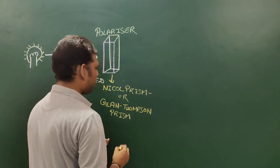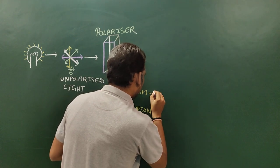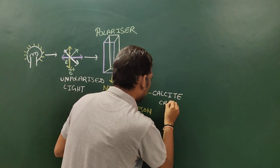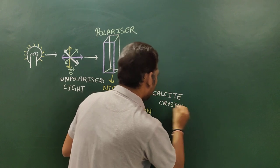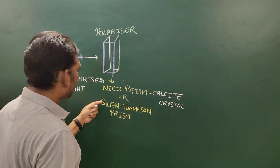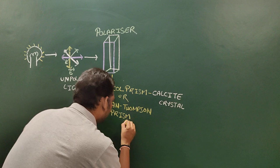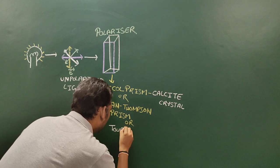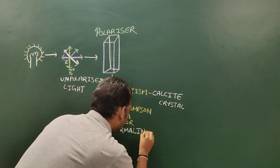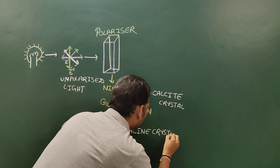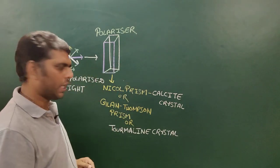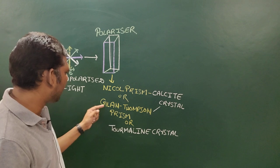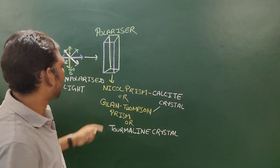Nicol Prism and Gland Thompson Prism are generally made up of calcite crystal. Apart from these, we can also use tourmaline crystal as a polarizer. However, due to high purity, we generally use Gland Thompson Prism, because Gland Thompson Prism gives better polarization as compared to Nicol Prism.